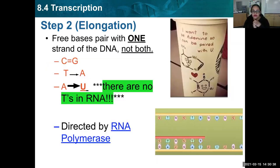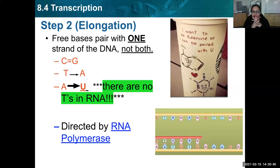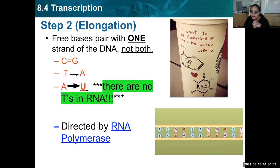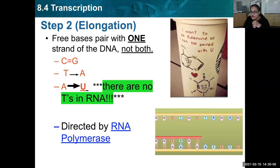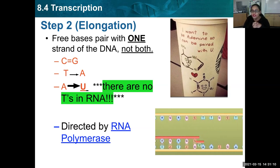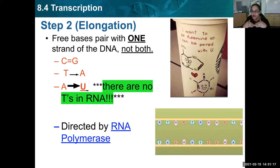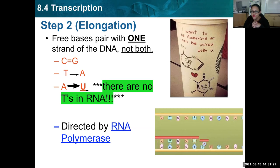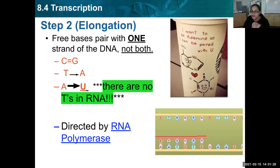Step two is called elongation — making something longer. Free bases pair with one strand of DNA, not both, and the rules change. C's and G's, the curly letters, still stay the same — they still pair with each other. DNA will still have T's that will pair with a free-floating A. However, the A's will now bond with U, the uracil. So once we start talking about RNA, there are no more T's. You have to pay attention to what quiz questions are asking — is it asking for a complementary DNA molecule or an RNA molecule? That will determine which letters to use. The process is directed by RNA polymerase, which directs and puts everything together.